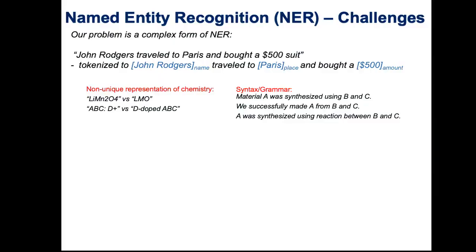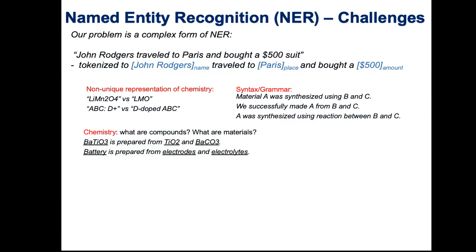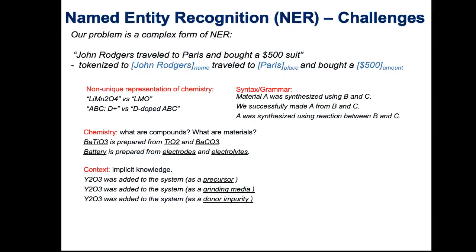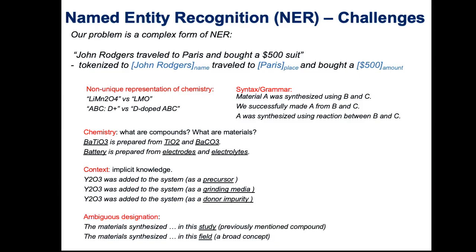You need implicit knowledge. 'Yttrium oxide was added to the system' — that could be as a precursor, as a grinding media, or as a donor impurity. If you read the sentence by itself, it's the same sentence but you don't know what it meant. The first thing we developed was a materials entity recognition parser — much better than the standard one, chem data extractor — and we're about to release it to the public. People write things like 'Mg_x Al_{2x}' — and you have to parse that as a vector of compositions with different values of x.